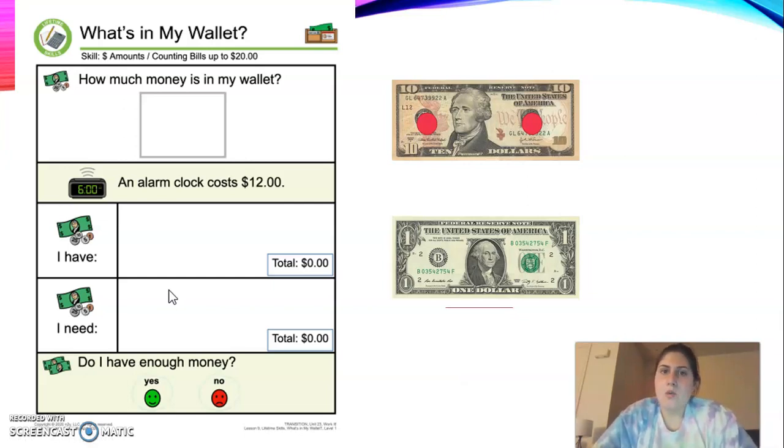I want you to count this money by yourself. So we have a ten dollar bill and we have a one dollar bill. Remember circles mean count by fives. The line means count by ones. Figure out how much money you have and put it in your top box. Also put that amount here for I have. I'll read you what we're shopping for. An alarm clock costs twelve dollars. So how much do you need? Fill it out. Compare your prices and decide if you have enough money. Pause me if you need to.